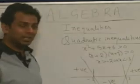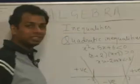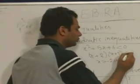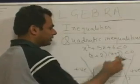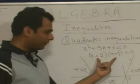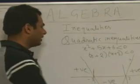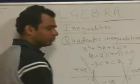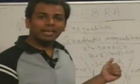Similarly, instead of greater than or equal to 0, if x² + 5x + 6 < 0, then (x + 2)(x + 3) < 0. We need a negative value. Looking at the graph, the negative region lies between −2 and −3. So straight away we can say that the value of x lies between −3 and −2. This is how we solve quadratic inequalities.